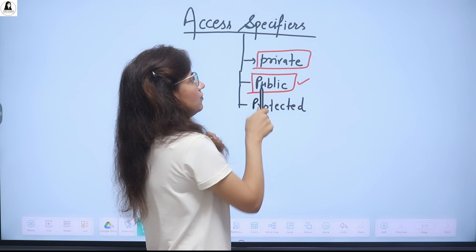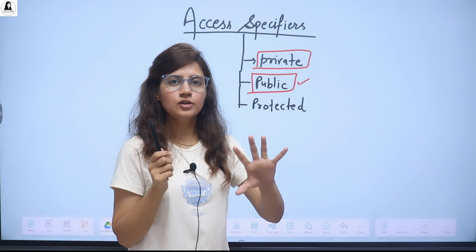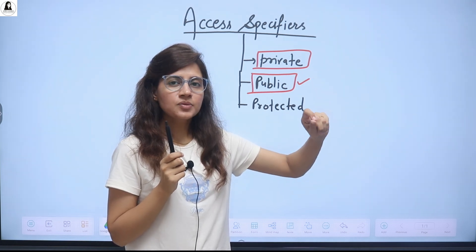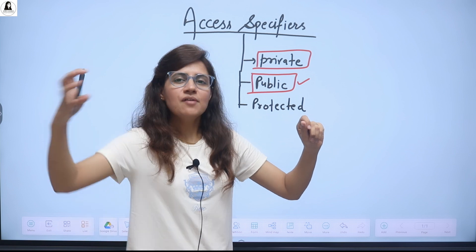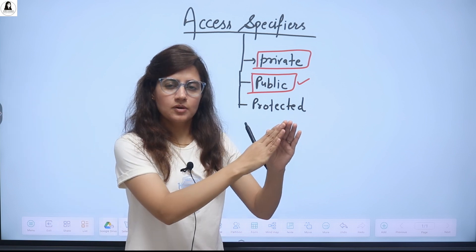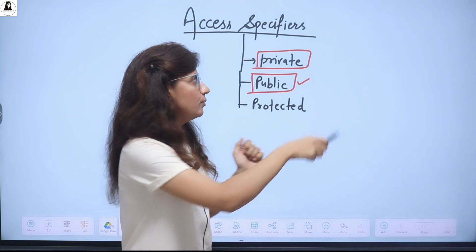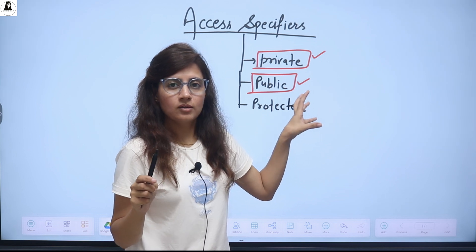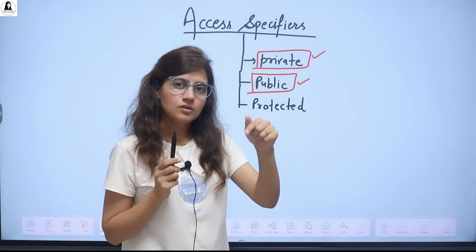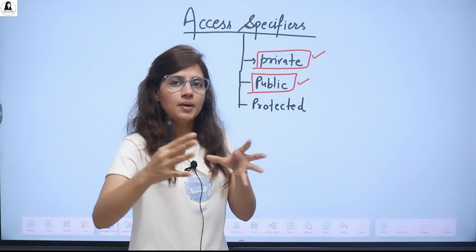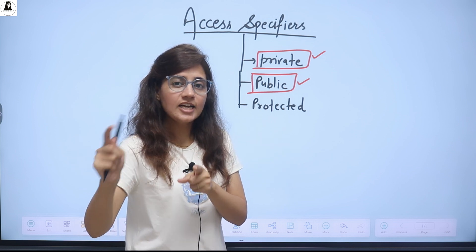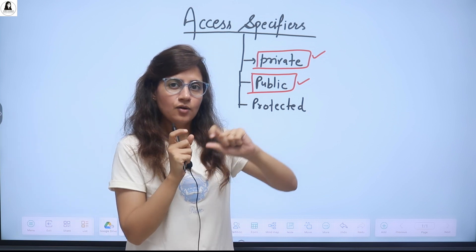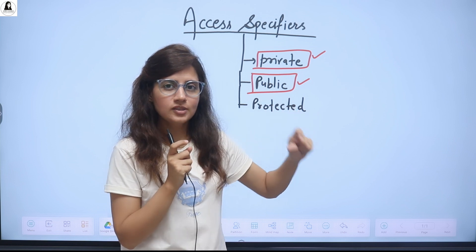The second is private. If you want your attributes or methods to be private in your class — so that not everyone can access that class member — you can make them private. If you make any class member private, those attributes or methods can be accessed from inside the class only, by the other members of the class, or by the friend of that class. We will see the friend concept and how to access private attributes practically.